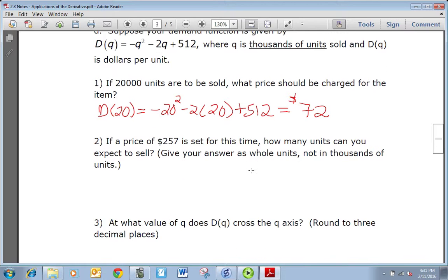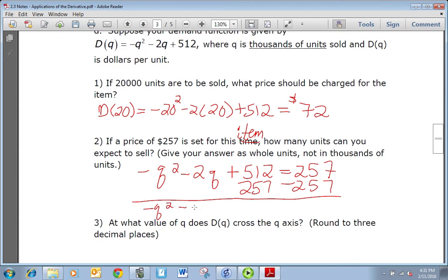If a price of $257 is set for this item, how many units can you expect to sell? Give your answer as whole units, not in thousands of units. This one we're going to take our demand function and we're going to set it equal to the price that we want and solve for q to get how many units. So you just need to subtract 257 from both sides since it's a quadratic function, and you get -q² - 2q + 255 = 0. So it's a quadratic function and you can use your quadratic formula to solve it, and you're going to get that q is 15.